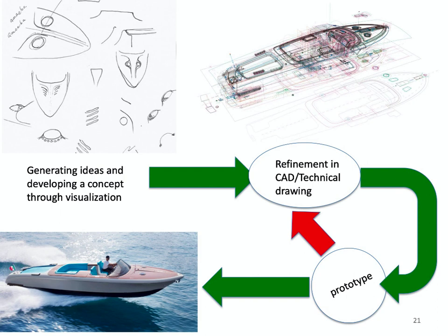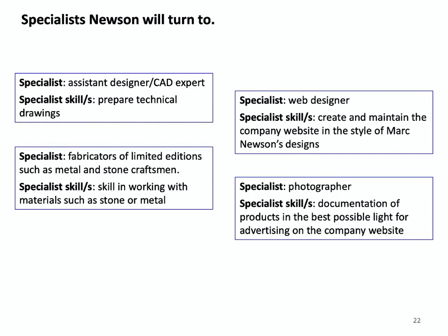External suppliers are especially important in the refinement, production and post-production stages of the design process. In the final production stages, Newson will need the skills of specialised craftsmen and specialists in particular fabrication techniques. Depending on his projects, he will turn to stonemasons, metal workers and mould makers. In post-production, he will need to promote his work and will turn to photographers and website designers.